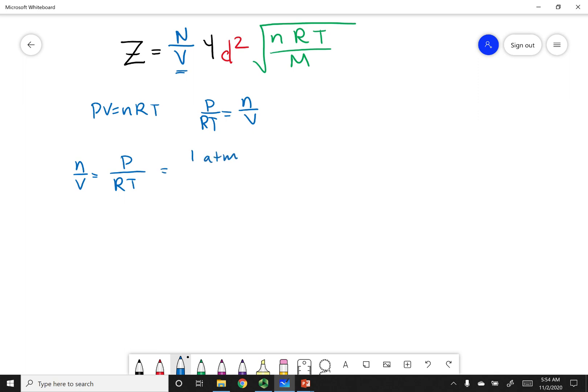My pressure is 1 atm. The R that I want to use in this case is 0.08206 liter atm per mole kelvin. I want to put my temperature in kelvin, 298 kelvin. What I get out of here is 0.041 moles over liter.